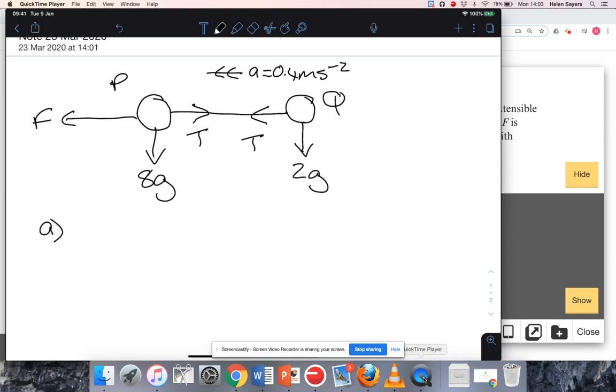So part A wants me to find the value of F. To do that, I'm going to model it as a single body, so I'm going to use F equals ma. I'm going to take the left as positive because that's the direction it's moving in on my diagram.